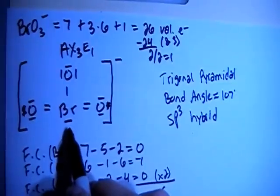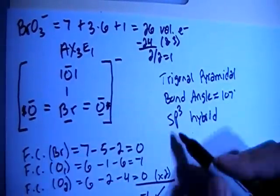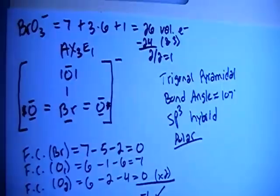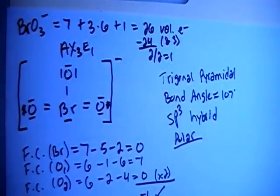And due to the fact that you have this non-bonding pair of electrons here, that is going to make this a polar compound. That is pretty much it for this ion. If you have any questions, let me know. And thanks for watching.